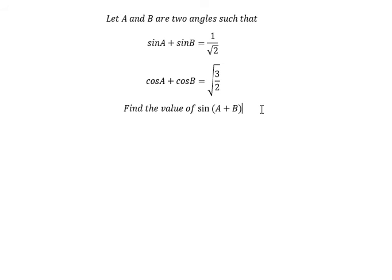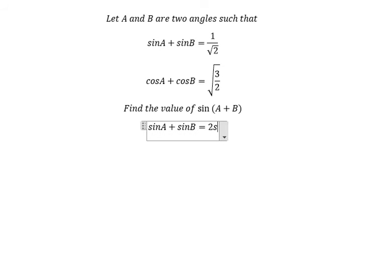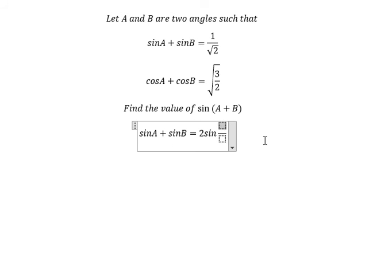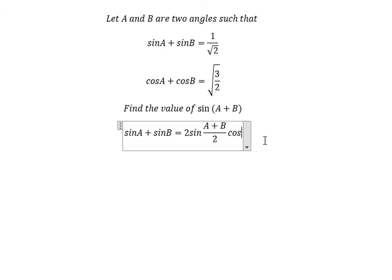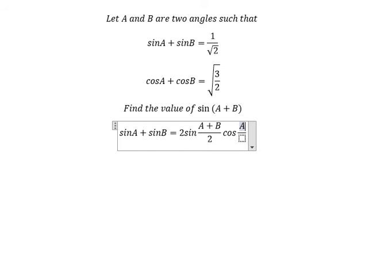I will show you the technique to answer the question. We need to use this formula: sine A plus sine B equals 2 sine of (A plus B) over 2, times cosine of (A minus B) over 2.